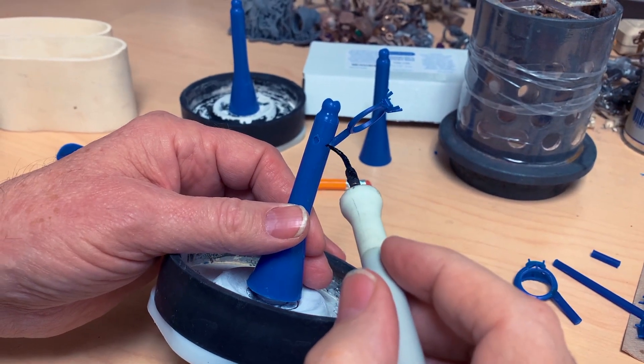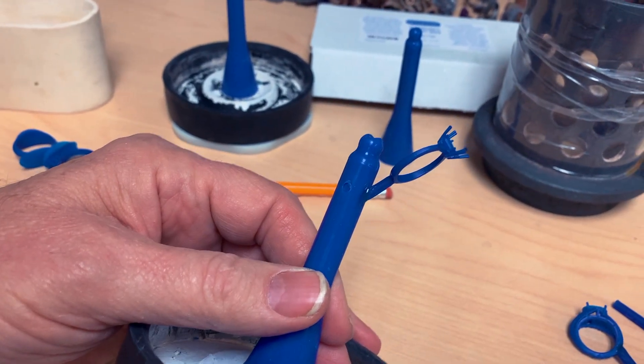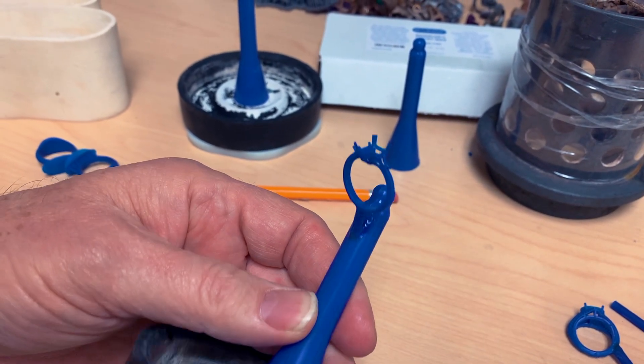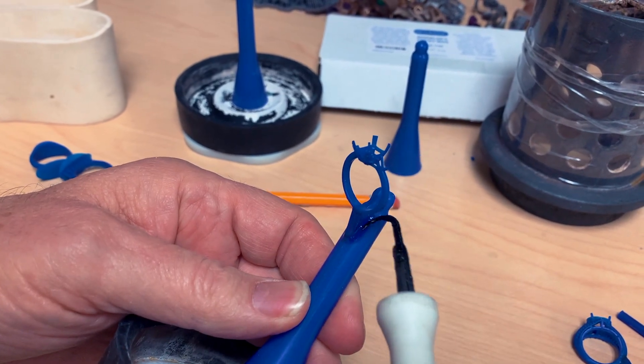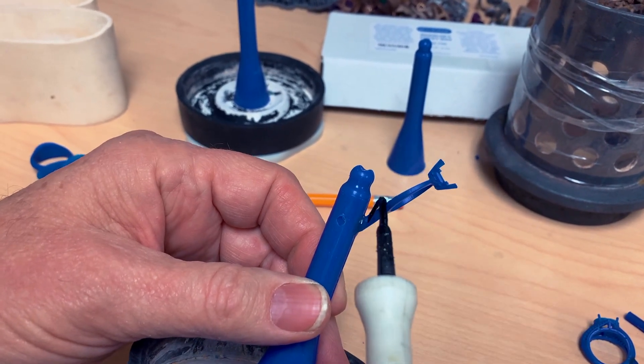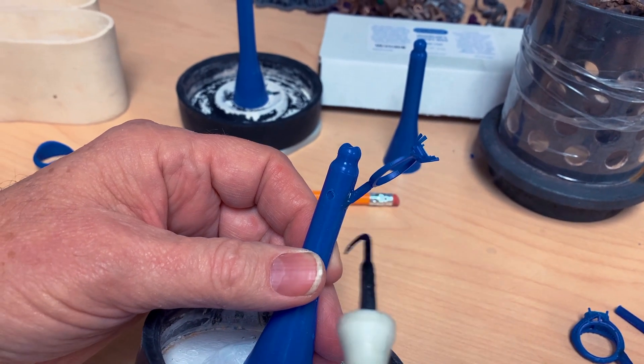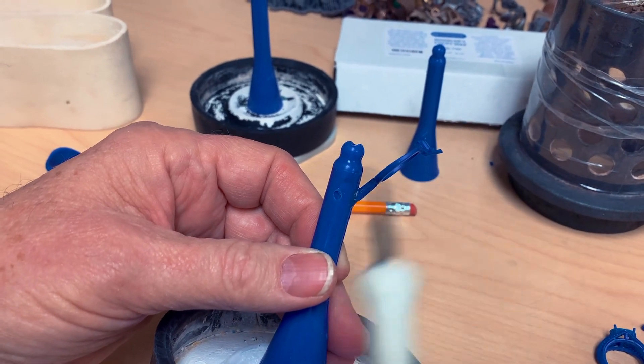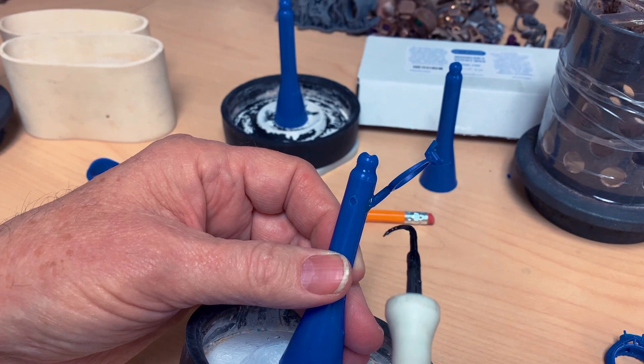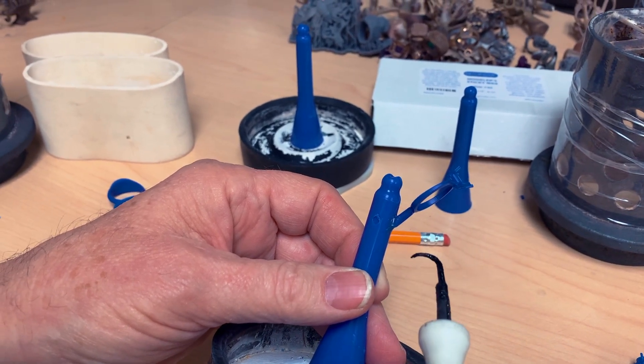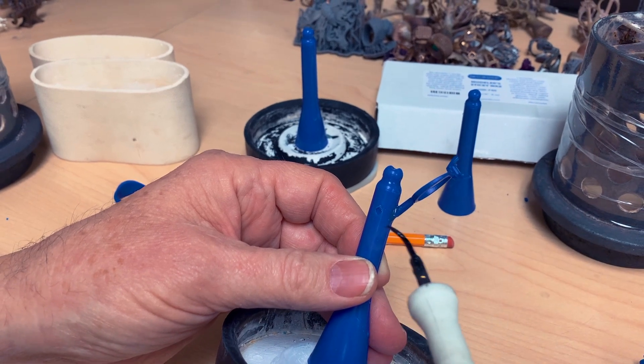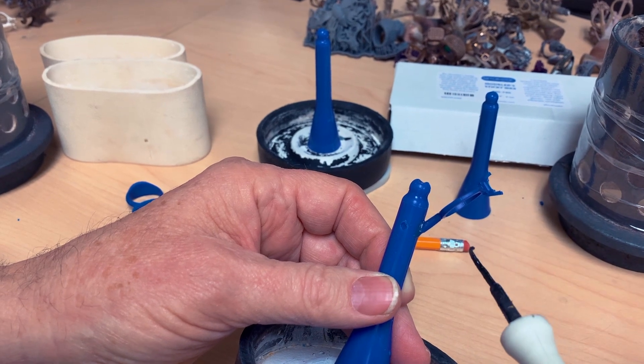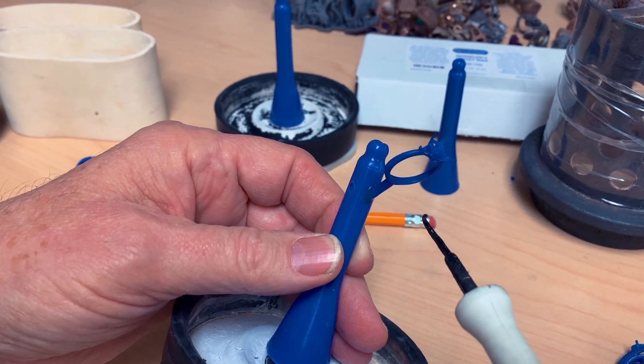You want a nice transition. You don't want to have any holes in there. Because, once you start putting investment in, if you had a hole up in there, investment would go up in there. Then, when the wax burned away, you would have this little investment spike that was sticking up in there that went into the hole. And then, when your metal flowed in, it could snap that little investment spike off and swirl around in your metal and cause bad surface quality or inclusions in the metal.